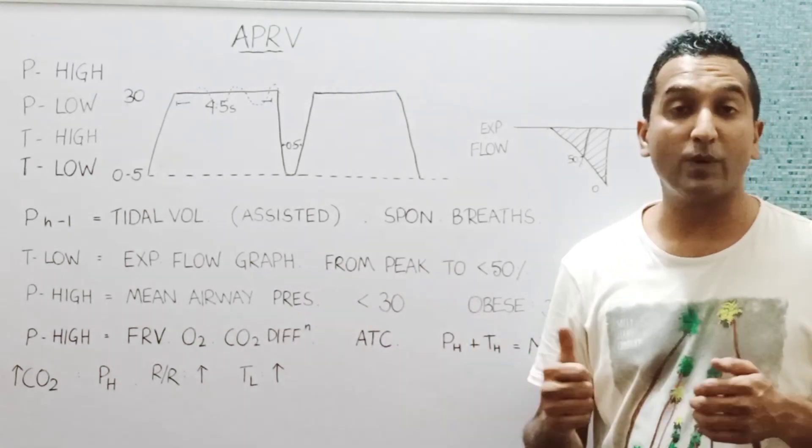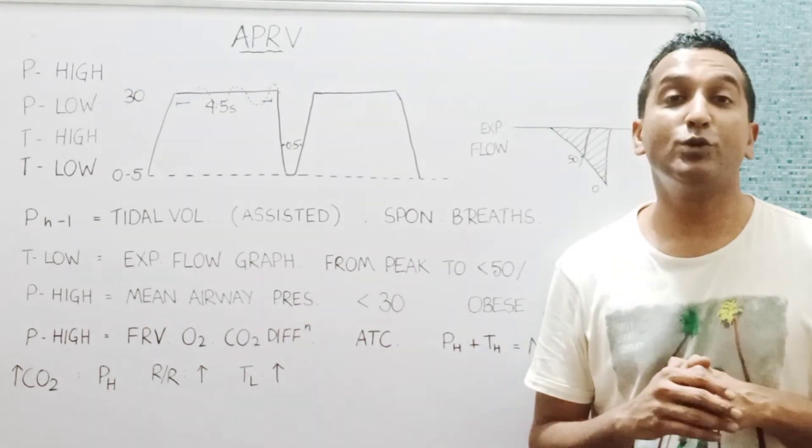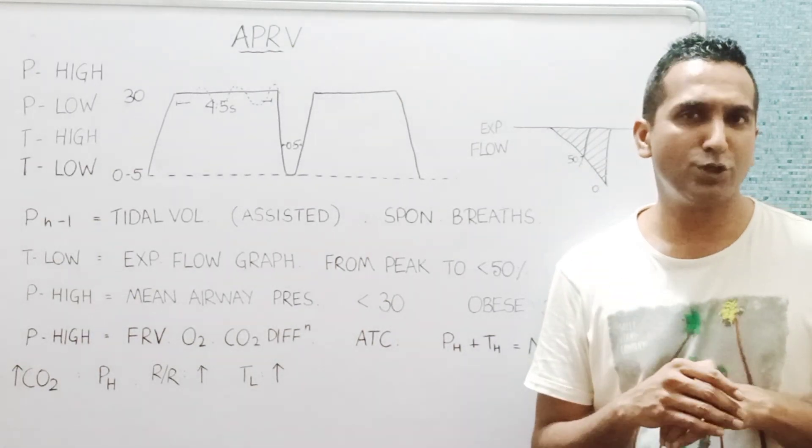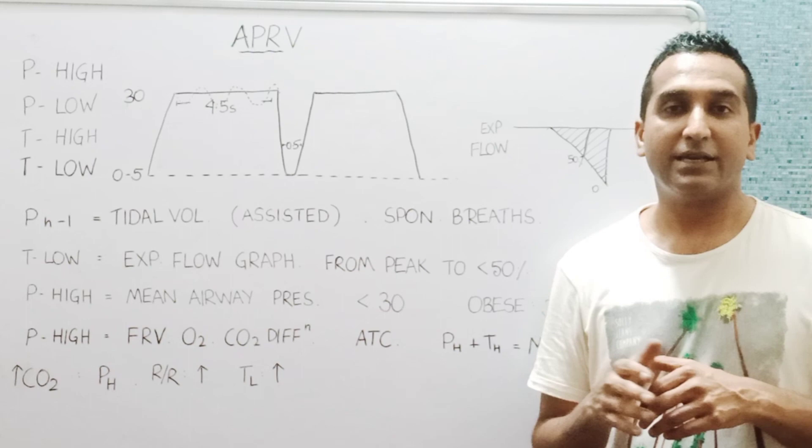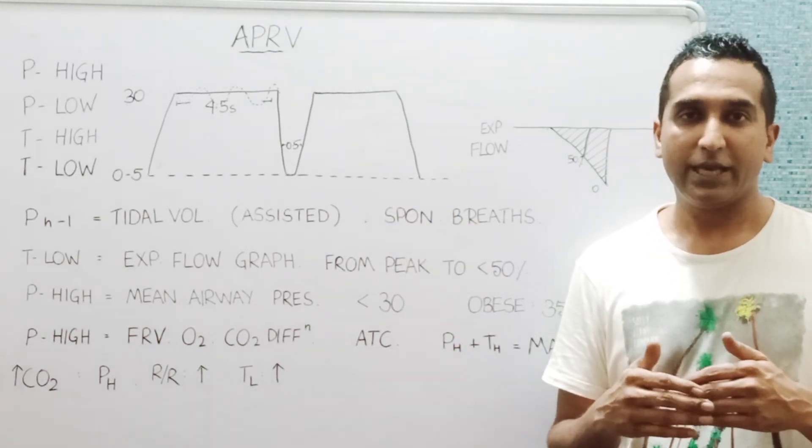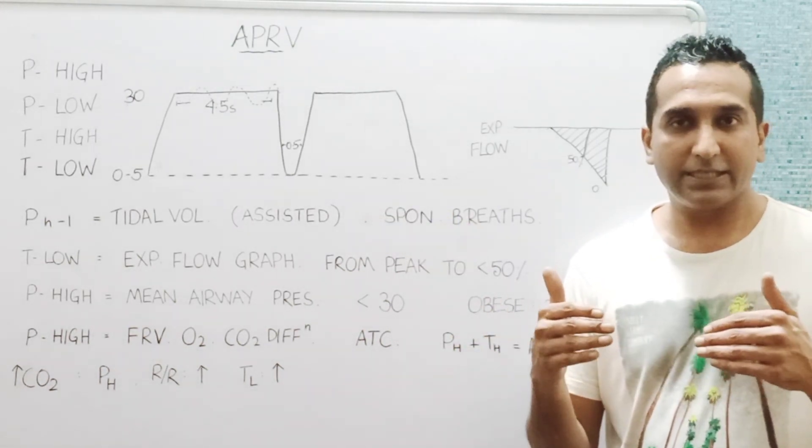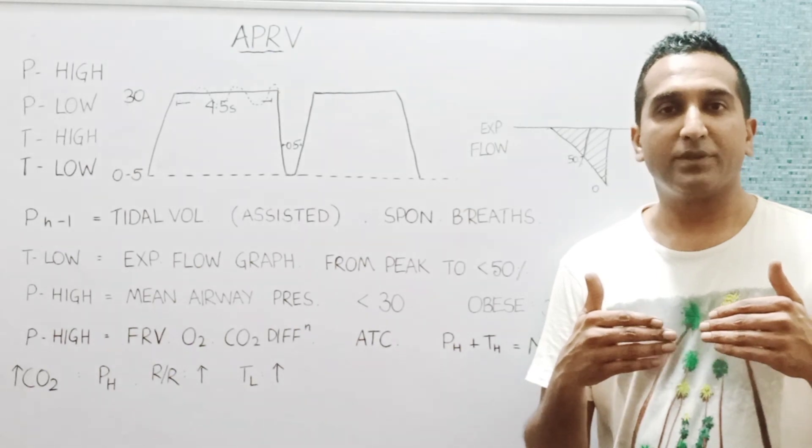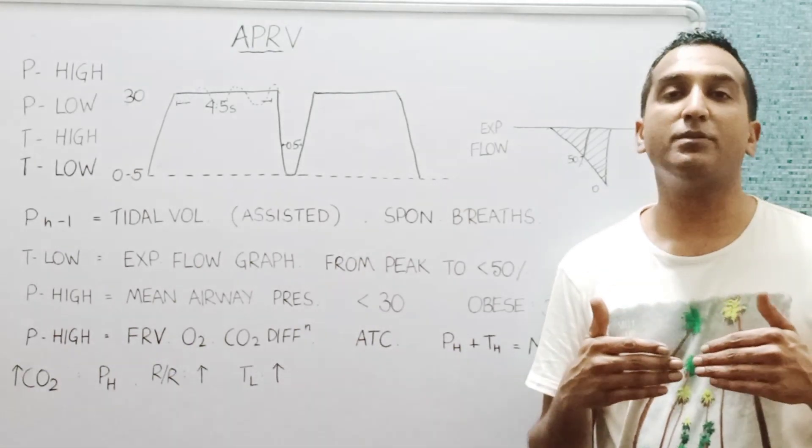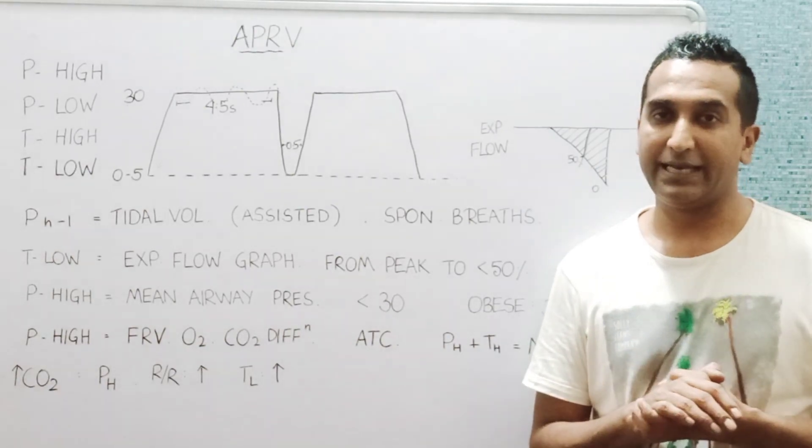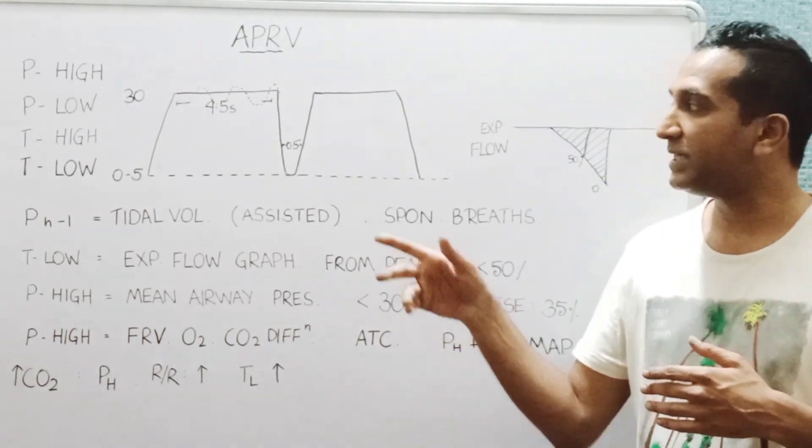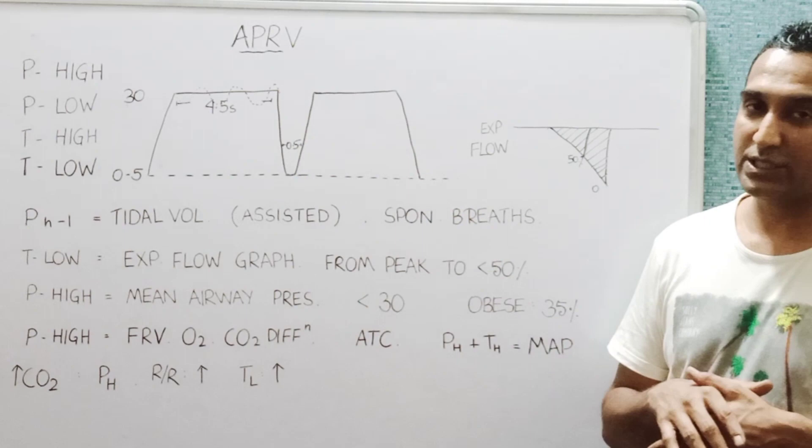The P high will also help in CO2 diffusion, something which we don't generally talk about in ventilation. We just talk about the time required for the release of the expiration. What happens here is the increased time allows the CO2 to diffuse from the pulmonary circulation into the alveoli, and then this can be released with every release which takes place.